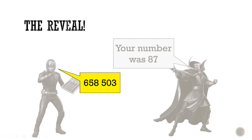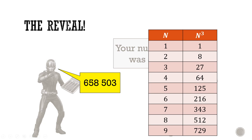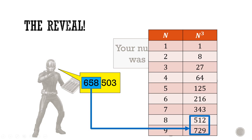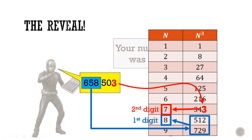Here's the grand reveal. First, memorize the cubes from 1 to 9: 1 cubed is 1, 2 cubed is 8, and so on up to 9 cubed is 729. From the 6-digit number, throw away the last 3 digits and focus on 658. This is between 512 (8 cubed) and 729 (9 cubed), so the first digit must be 8. Next, note that the last digits of cubes 1–9 are all distinct — since our last digit is 3, which corresponds to 7 cubed, the second digit is 7. Putting these together gives the cube root as 87.